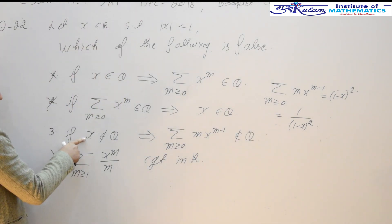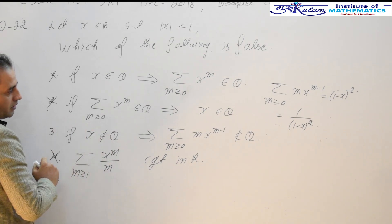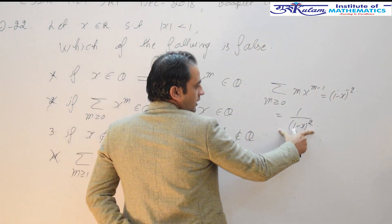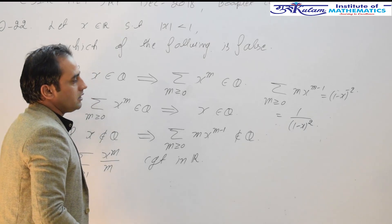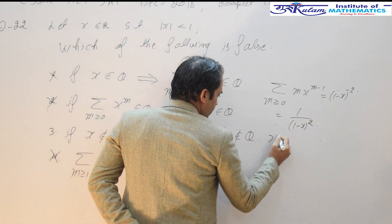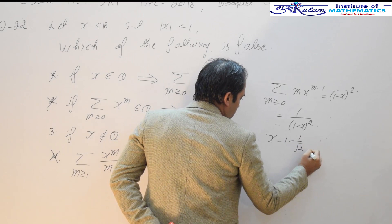Now, the given third option is: if x is an irrational number, then this sum—that is this value—is an irrational number. Definitely, this is a false statement.